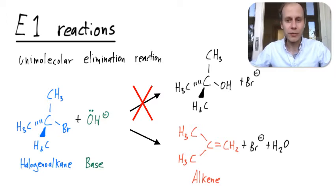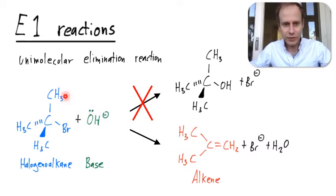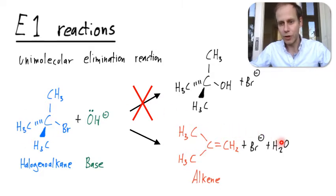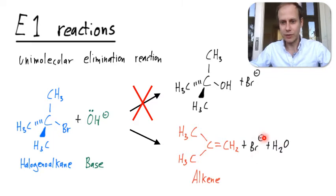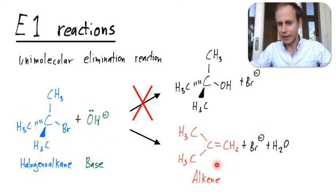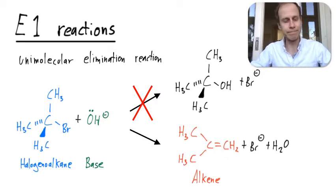Instead of substituting the bromine, the hydroxide with its lone pair steals a proton from one of the methyl groups and forms water. As a result, the bromide splits off and the halogeno alkane forms an alkene with a pi bond. Let's understand why this is happening in this situation.